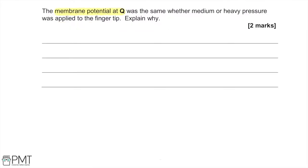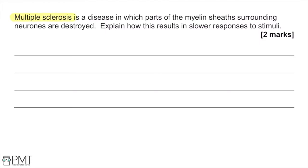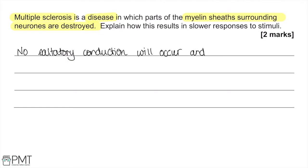The membrane potential at Q was the same whether medium or heavy pressure was applied because a certain threshold value had been reached, causing a maximal response. Multiple sclerosis destroys parts of the myelin sheath surrounding neurons. Myelination speeds up transmission by insulating the axon, so removing myelin sheaths reduces transmission rate and eliminates saltatory conduction. As a result, there will be more depolarization over the length of the membrane.